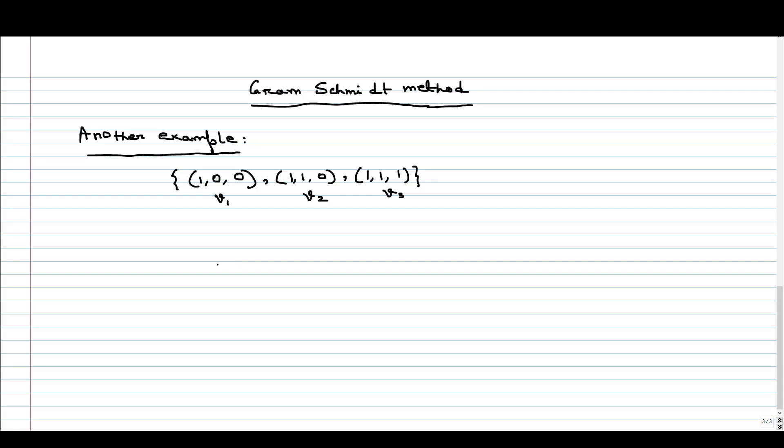Hello everyone. In this video, we will take another example. Here the example is written. We have three vectors V1, V2, and V3, and you can see that these are linearly independent vectors of R³. So this forms a basis.